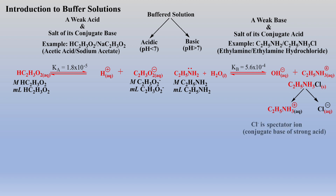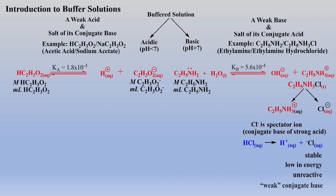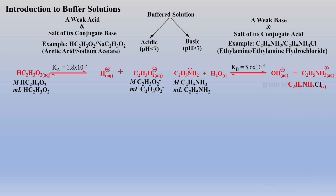We do not have to include the chloride ion in our equilibrium because it is the conjugate base of a strong acid, and by definition is stable, low in energy, and unreactive. Often your professor will simply refer to this anion as a weak conjugate base, or simply a spectator ion.